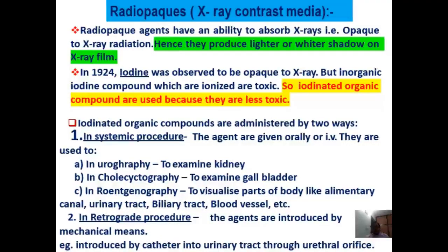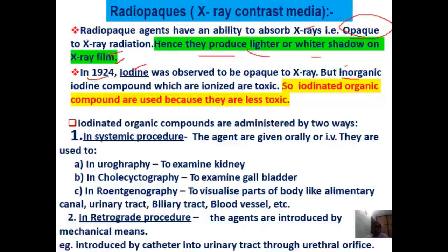Radio-opaque agents have an ability to absorb X-rays — that is, they are opaque to X-ray radiation. This property allows them to produce lighter or whiter shadows on the X-ray film. For this purpose, in 1924 iodine was used. Both organic as well as inorganic forms of iodine were used, but inorganic forms were discontinued as they ionized to give toxic compounds. So iodinated organic compounds are used because they are less toxic.